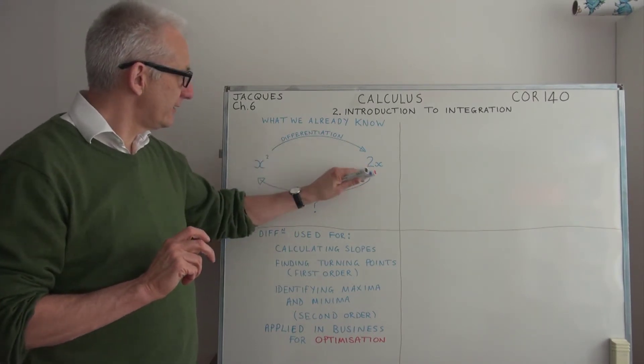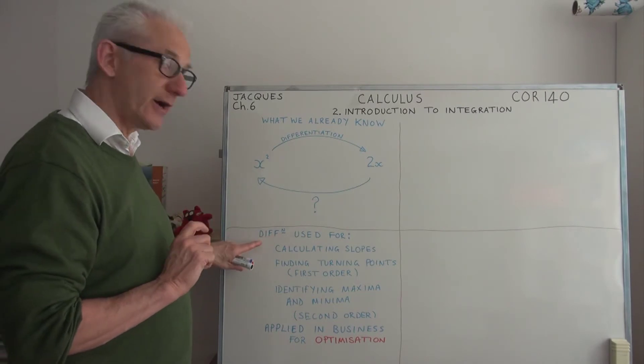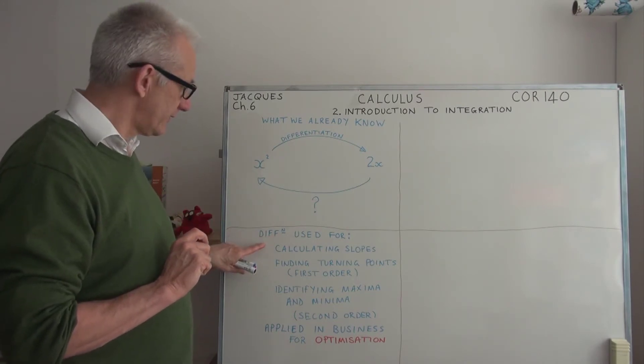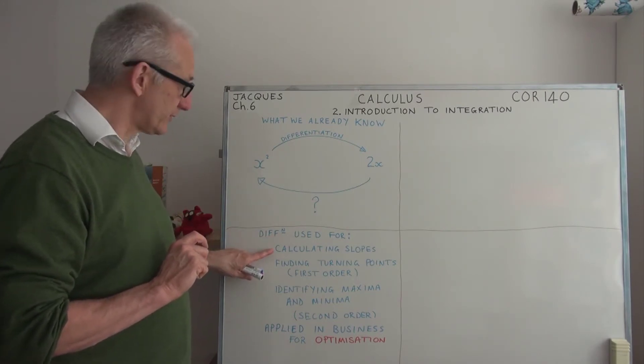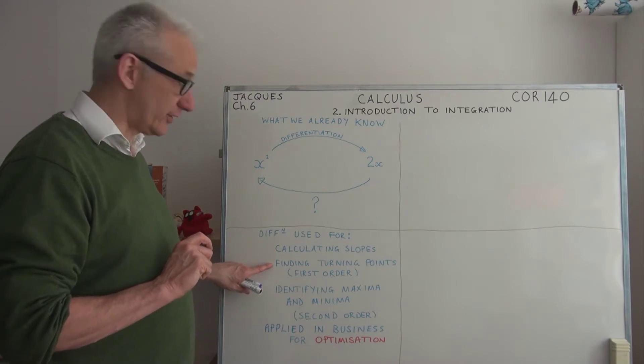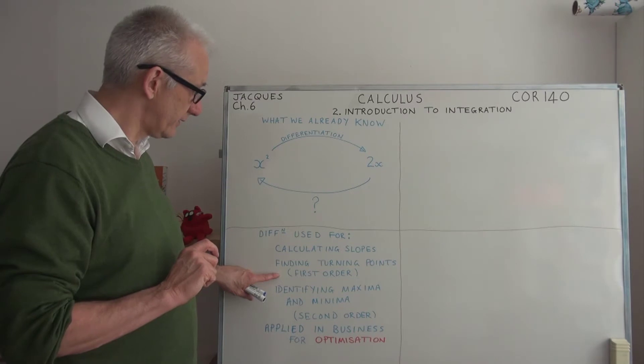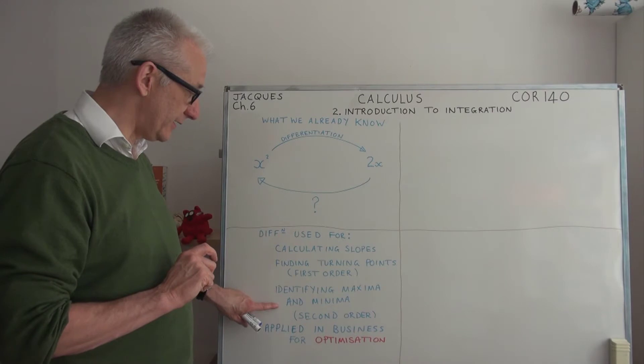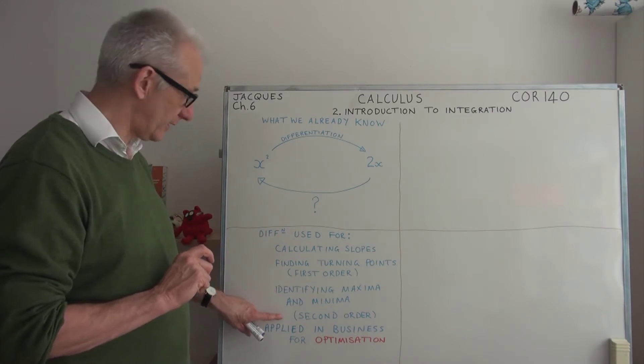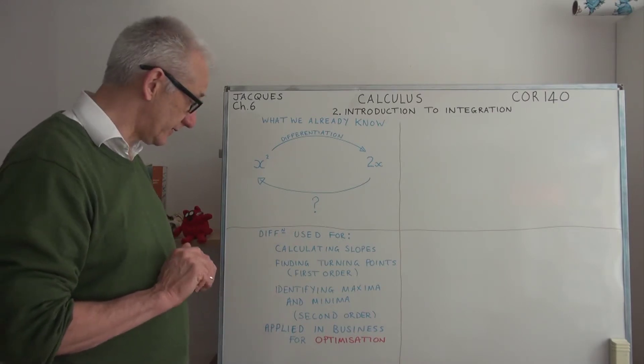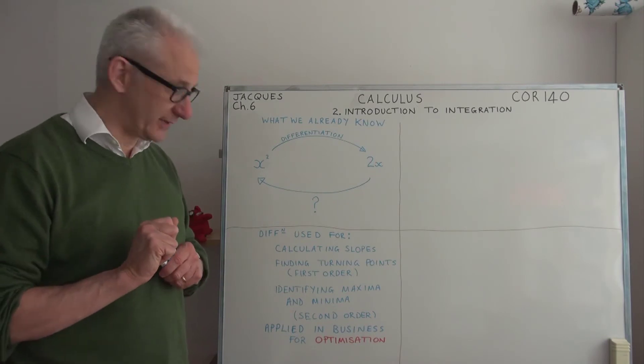We know that differentiation is used for calculating slopes, finding turning points using first order differentials, and then we can identify a turning point as either a minimum or maximum using second order differentials.